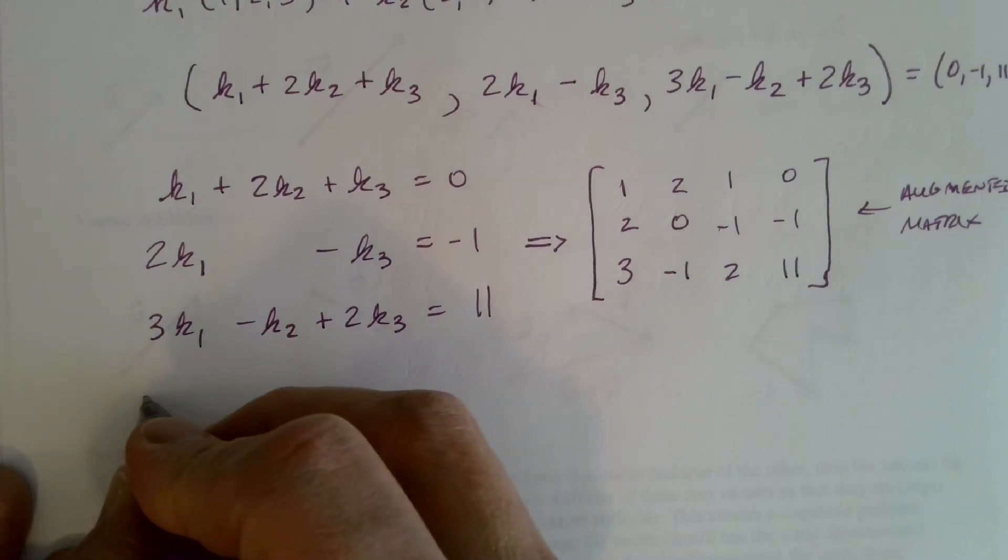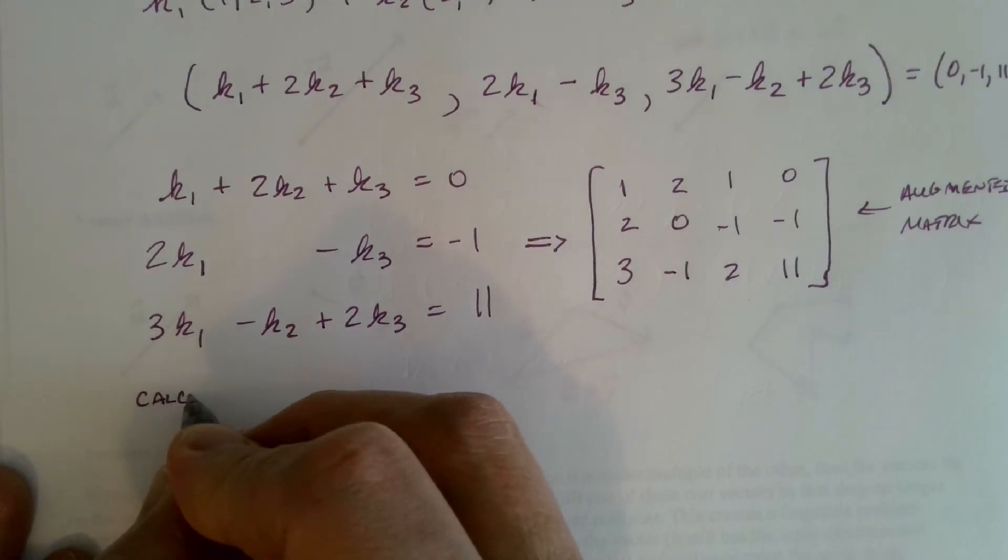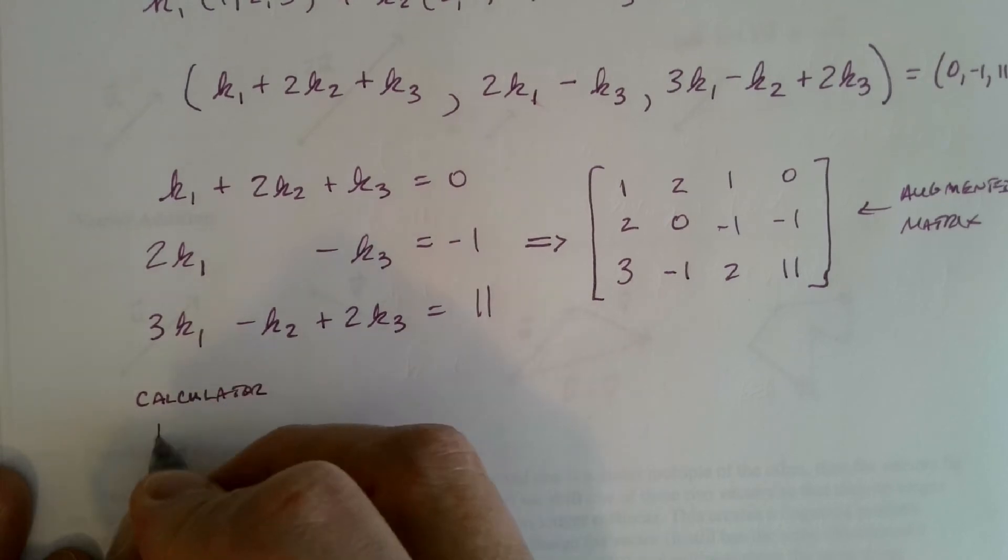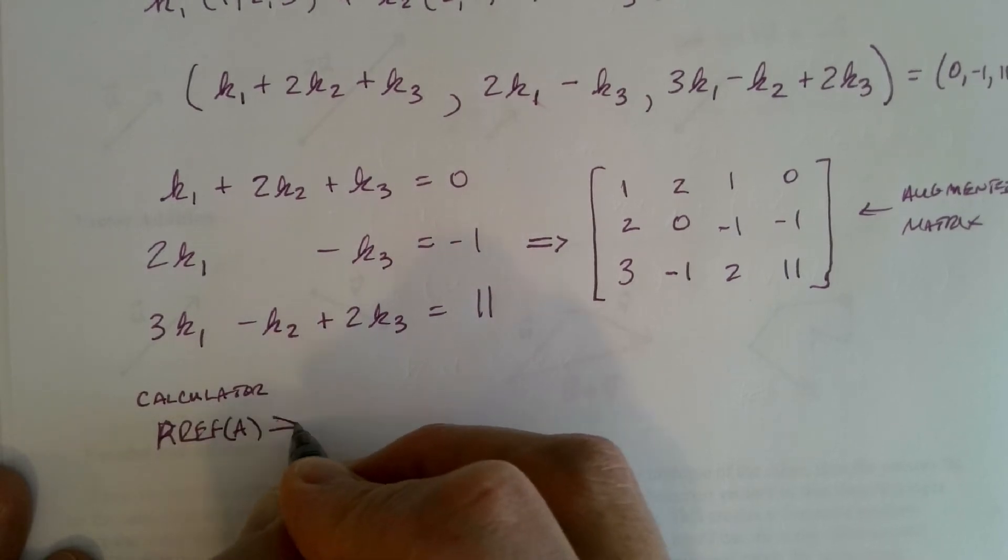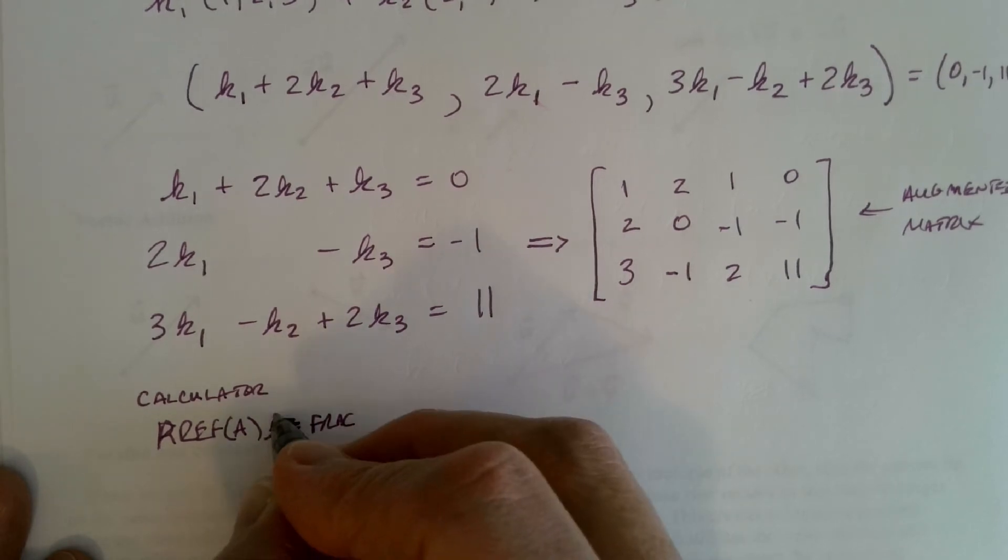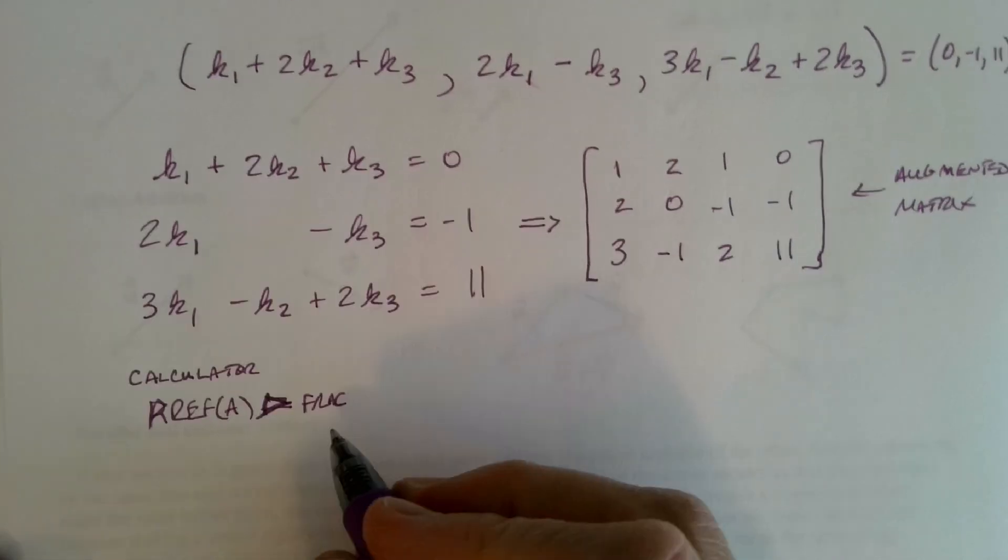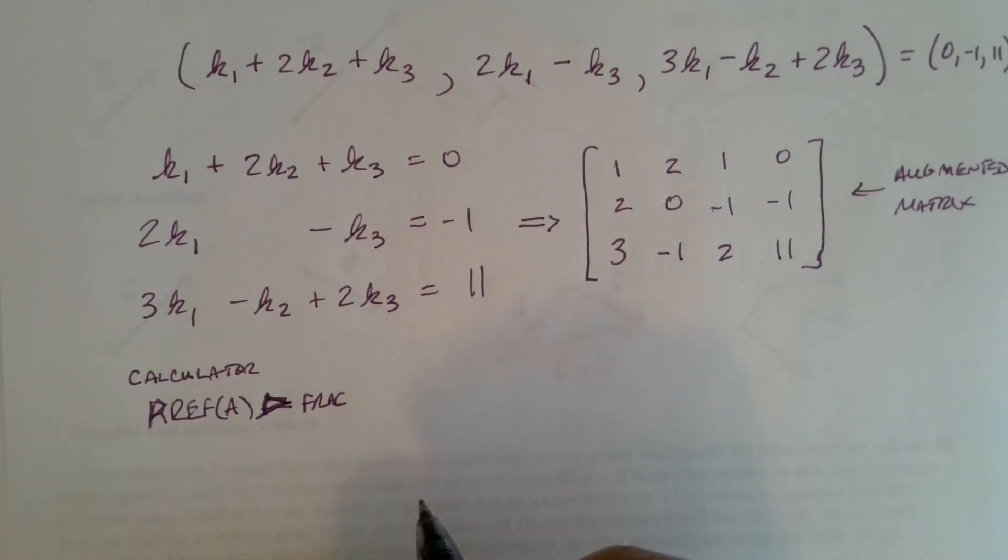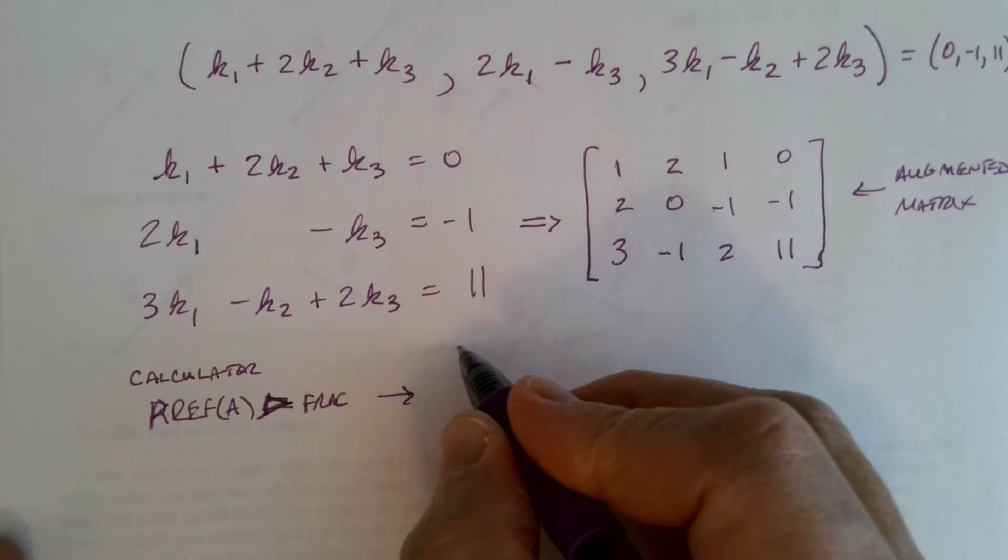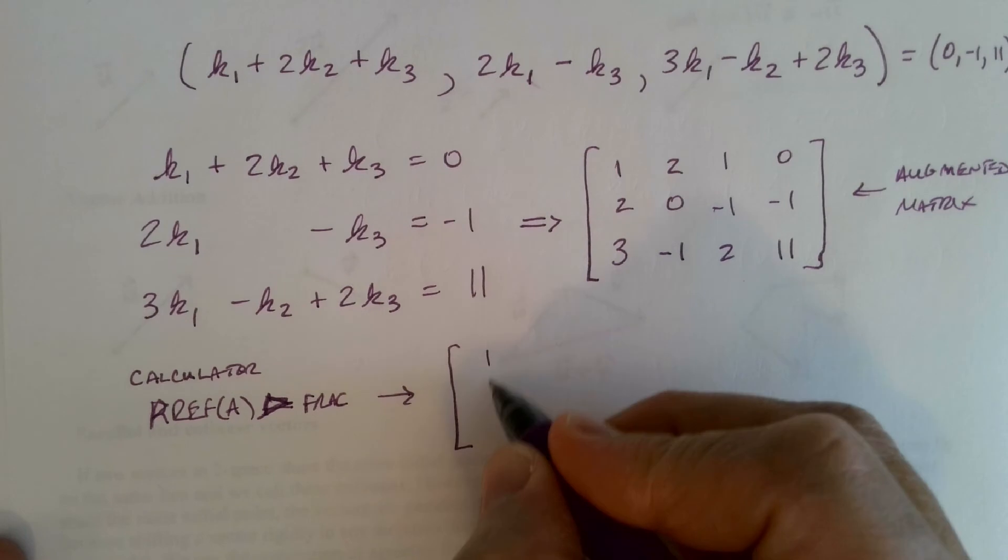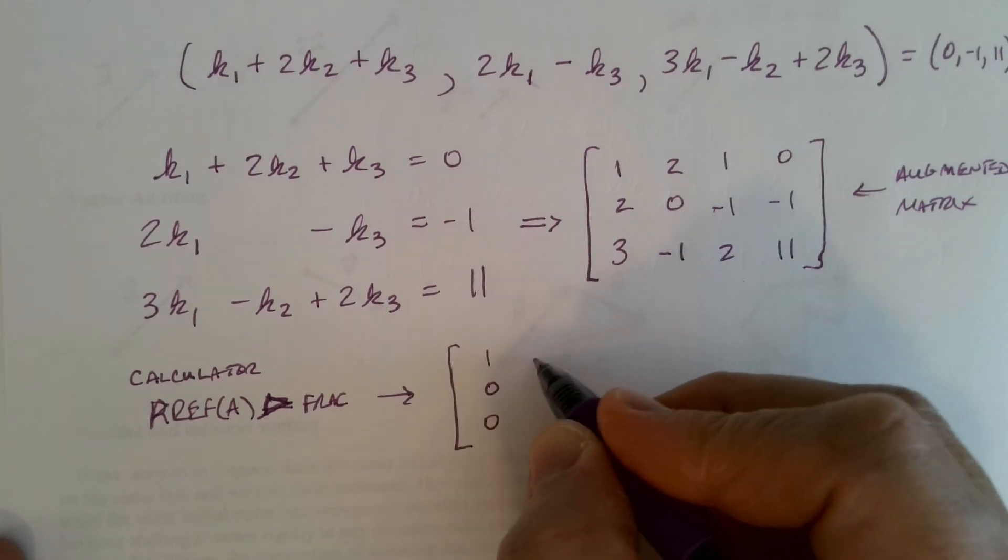I'm just going to go ahead and use the calculator's command at this point, the RREF of matrix A and convert those to fraction if I need to. Don't forget that. I have a little trouble with the little arrow symbol there. Convert to fraction. I don't really need it here, but in general, you want to do that. And so what do we get when we put that into reduced row echelon form? This is what we get, and I would have you make sure you confirm that.